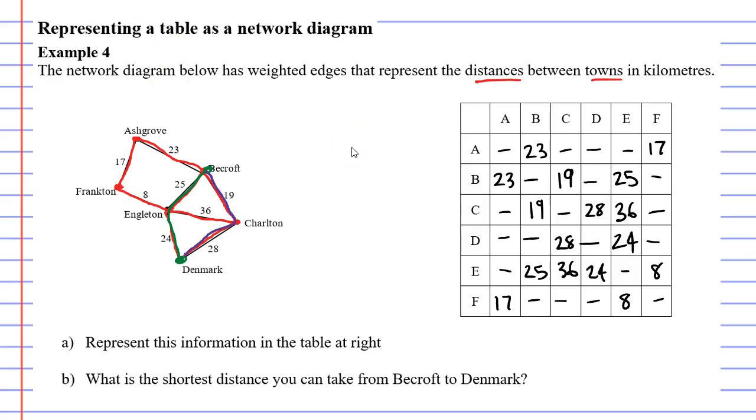Going through Engleton we have the distance of 25 kilometers and another distance of 24. So when we add these up we get 49 kilometers going through Engleton. And if we go through Charlton we have lengths of 19 and 28 kilometers, and when we add these up we get 47 kilometers. So the shortest distance you can take from Beecroft to Denmark would be 47 kilometers.